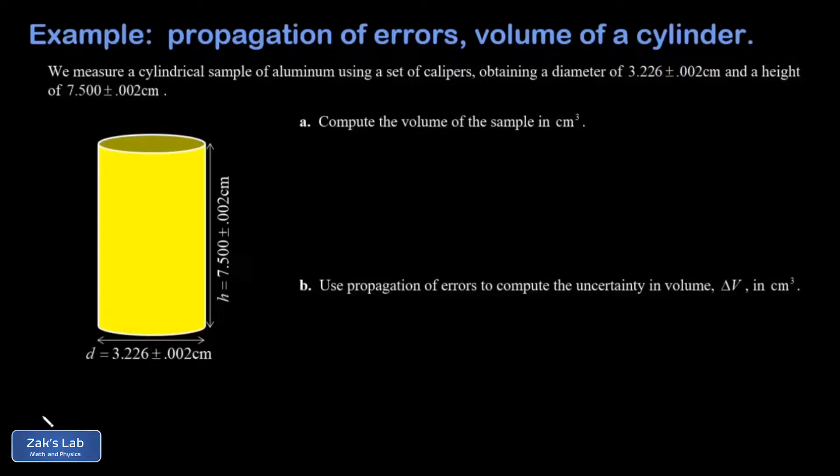In this video we're given measurements of the diameter and the height of an aluminum cylinder. We took these measurements with a set of calipers, each with a plus or minus uncertainty of 0.002 centimeters, which is the actual uncertainty on the calipers I have in the lab. We're paying close attention to using the propagation of errors formulas to properly get the uncertainty in the volume of this sample.